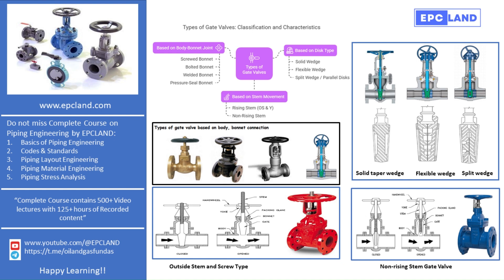Let's begin with the first classification: types of disc. Gate valves can have different types of disc or wedge inside them. The most common type is the solid taper wedge. This is the simplest and most widely used design. The solid wedge is strong and can be installed in any position. It works well with almost all types of fluids including turbulent flow. However, the solid wedge cannot adjust itself if the valve seat becomes slightly misaligned due to thermal expansion or external forces from the piping. This makes it more prone to leakage.